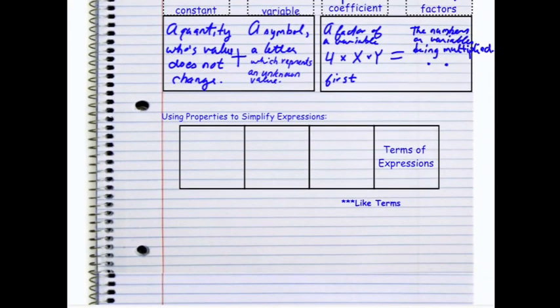So as we scroll down our page, you should have the terms of expressions foldable kind of popping out of your notebook. And we're just going to take a minute and we're going to add some terms. It should only be glued down on this one square so that across the inside, I can open it up and add some terms.